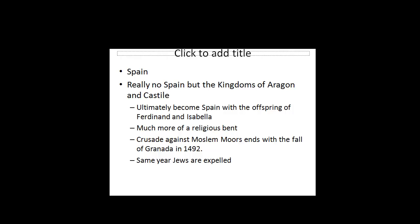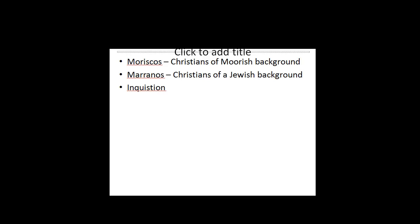In that same year, the Jews are also expelled from Spain. These terms you need to know: the Moriscos are the Christians of Moorish background, and the Marranos are the Christians of Jewish background. Because Spain was supposed to be a society totally controlled by the state, there was fear that these groups of Christians who had accepted Christianity — even though they were Muslim or Jewish — might not be totally loyal to the state. Hence, this is why you begin to see an Inquisition in Spain: it is a fear that the country was not totally behind the Catholic Church.